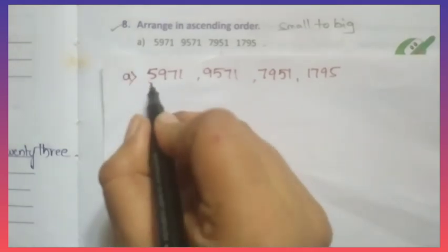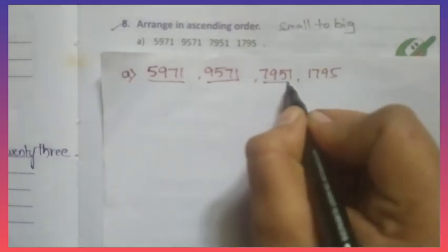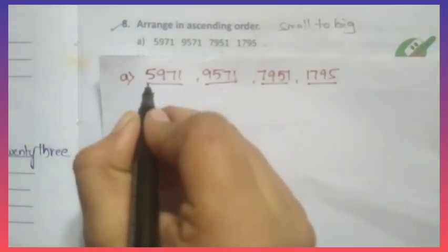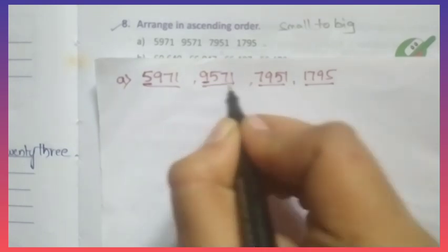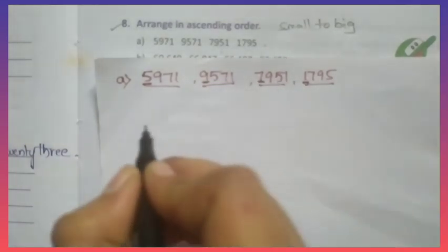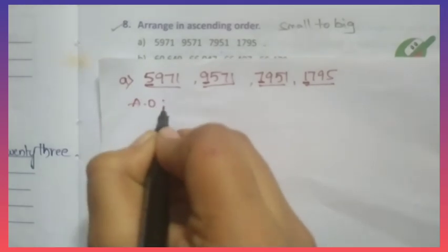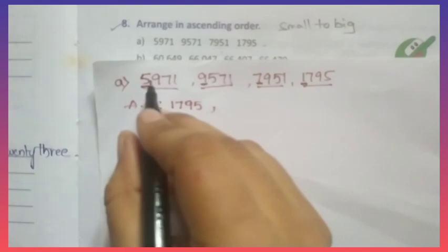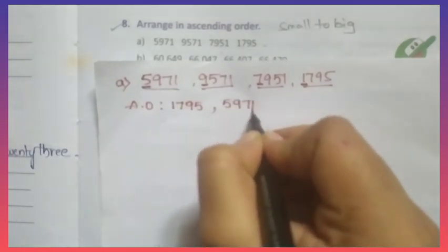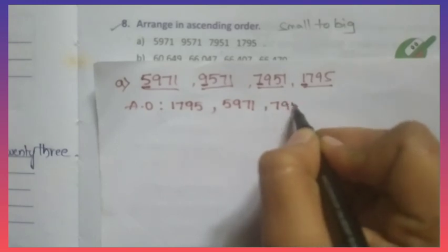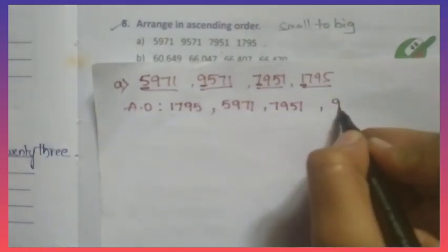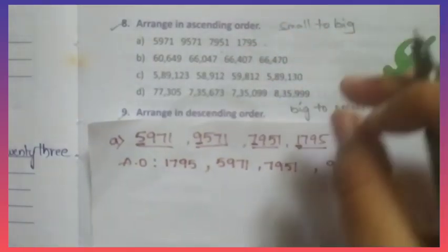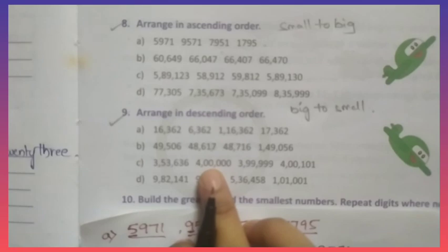Look at question A. All numbers have the same number of digits — 4 digits each. For ascending order (small to big), look at the lakhs digits: 5, 9, 7, 1. Which is smallest? 1. So first comes 1,795. Next is 5, so 5,971. Then 7, so 7,951. Then 9, so 9,571. This is the answer — arranged from small to big.